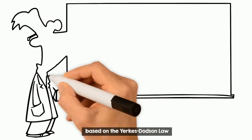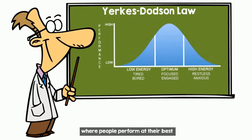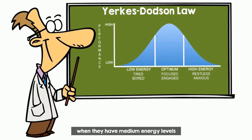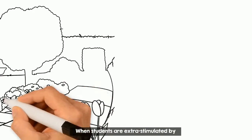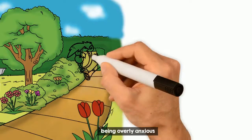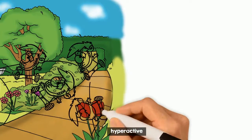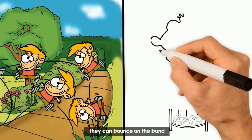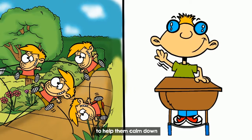The science behind bouncy bands is based on the Yerkes-Dodson Law, where people perform at their best when they have medium energy levels. When students are extra stimulated by being overly anxious, hyperactive, or frustrated, they can bounce on the band to help them calm down.